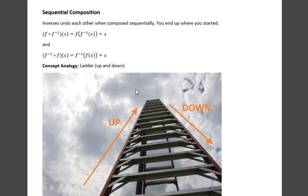Sequential composition. Inverses undo each other. When composed sequentially, you end up where you started. Here in notation, f composed with its inverse, which is f at f inverse of x, it gives you back x where you started. In the other order, the same consequence.